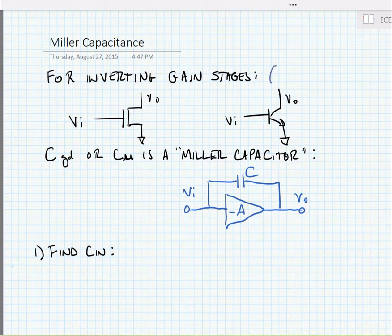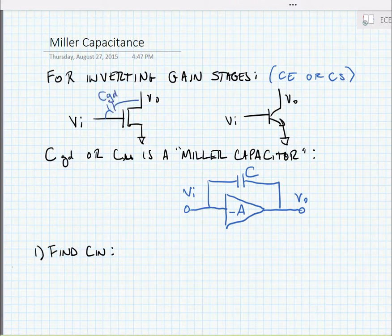So for inverting gain stages, which expressly for us means the common emitter or the common source CS stages, we have this capacitor CGD in the common source stages or CMU in the common emitter stages that is relatively difficult to analyze. Now we know that we call these capacitors CGD or CMU that go around inverting gain stages Miller capacitances. So here I've drawn a simplified circuit that shows a capacitor going around an inverting gain stage.